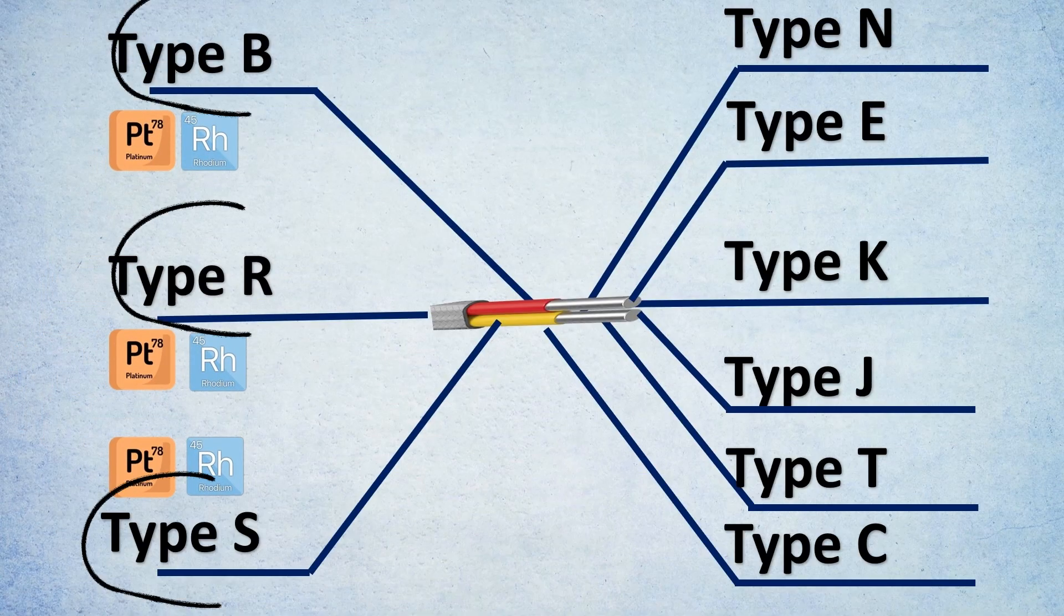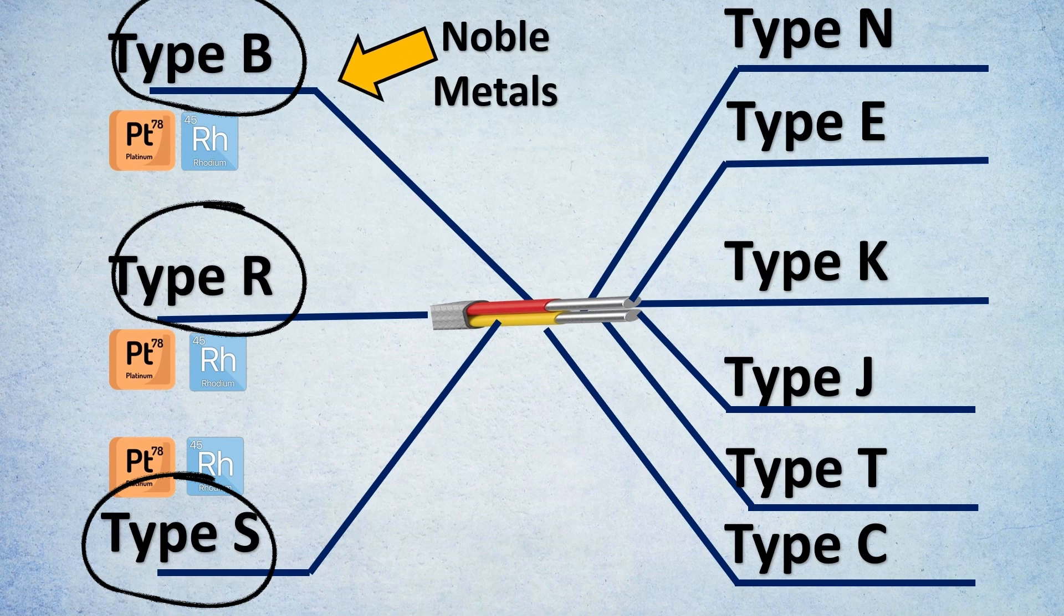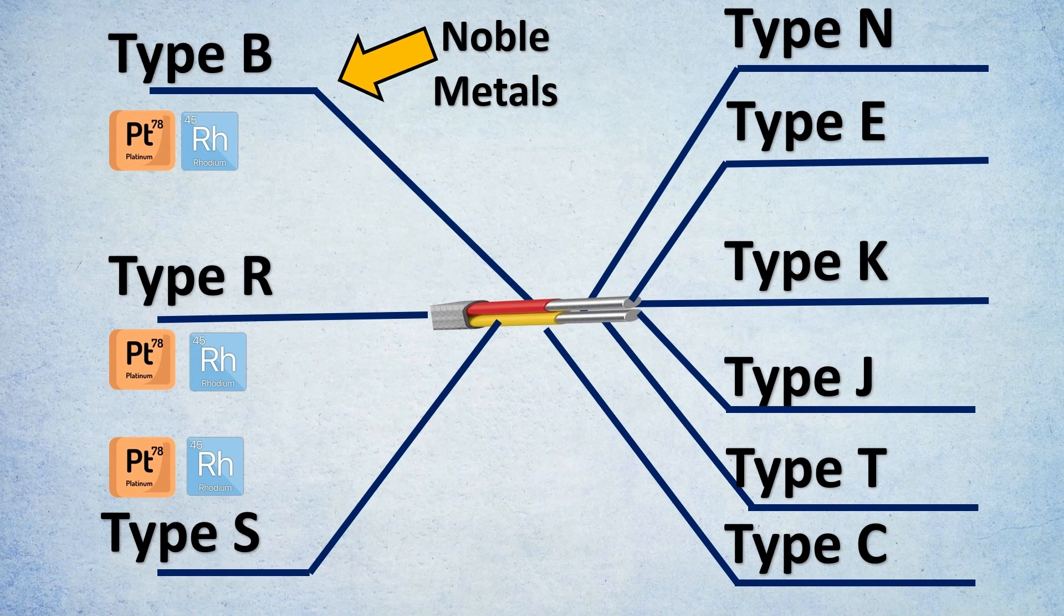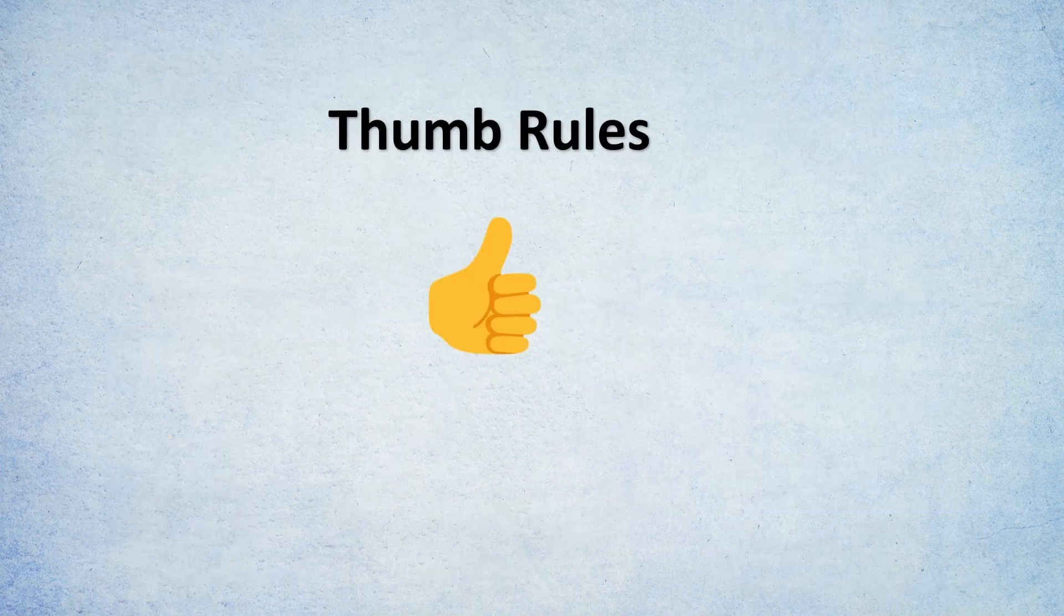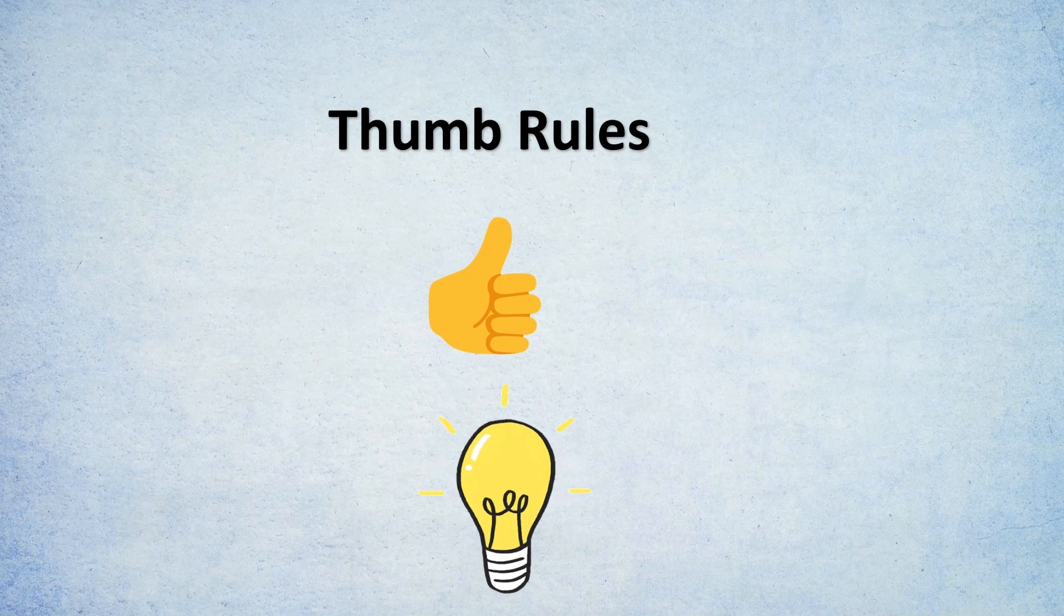But let's try to divide them. So basically these three which you see on the left hand side are nothing but made of noble metals like platinum, rhodium in different proportions and configurations. These three metals are usually preferred only when the other regular type of metals are not applicable. So let us look at the thumb rules as to how can you select which type of thermocouple to be used when.